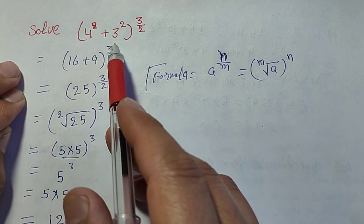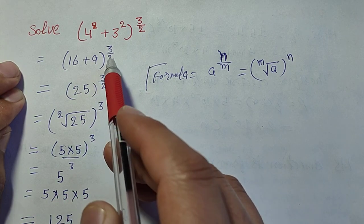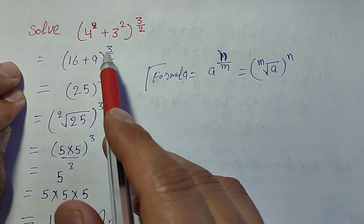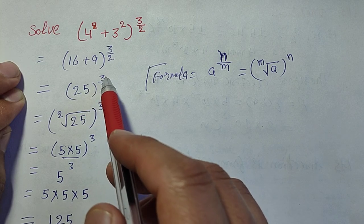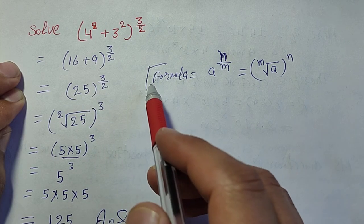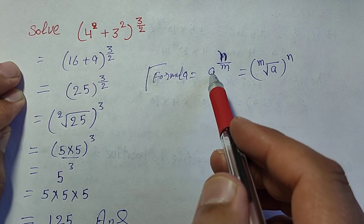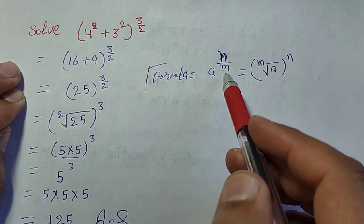16 plus 9 equals 25 raised to power three by two. Using the formula: a raise to power n over m equals the mth root of a to the power n.